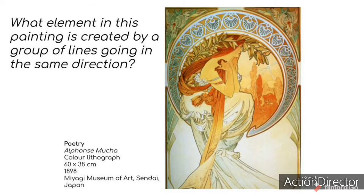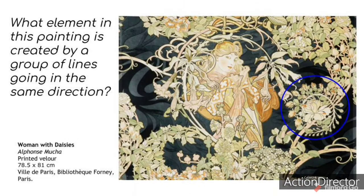What element in this painting is created by a group of lines going in the same direction? The hair and dress have curved lines that seem to create the illusion of movement. What elements in this painting is created by a group of lines going in the same direction? If you look at this group of flowers, they create the illusion of movement.